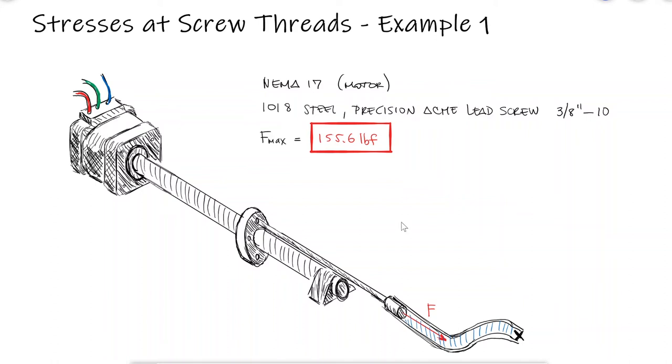For the motor lead screw piston setup that we analyzed, for example, one of power screws, link below, we want to calculate the maximum von Mises stress at the threads of the lead screw.